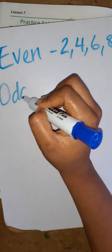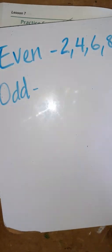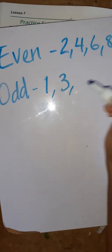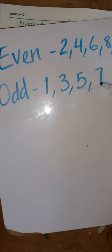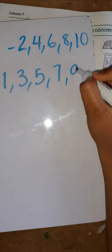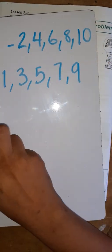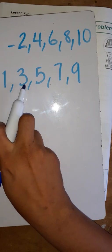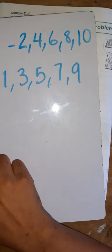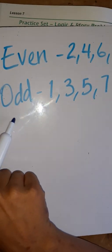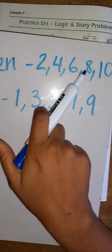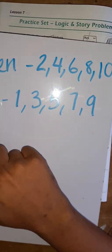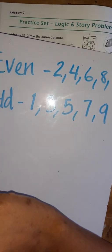Odd numbers are one, three, five, seven, and nine — any number that ends in one, three, five, seven, and nine is an odd number. Any number that ends in two, four, six, eight, or zero is an even number. Please remember that.